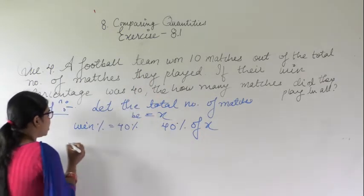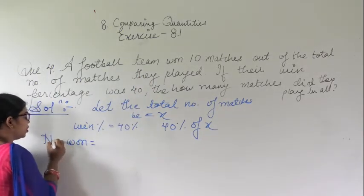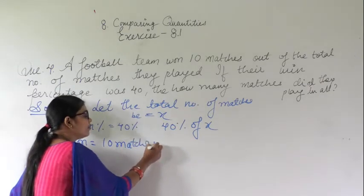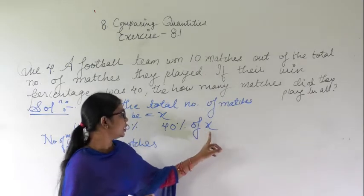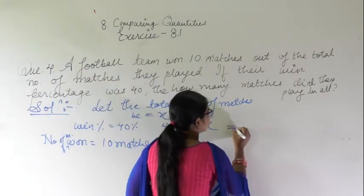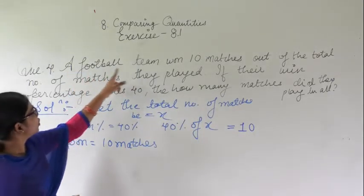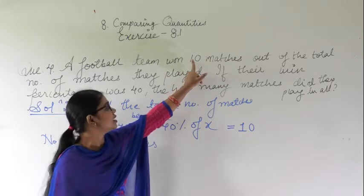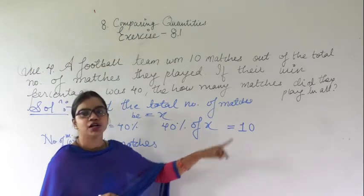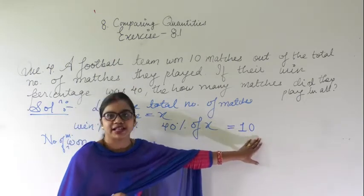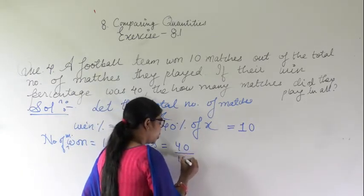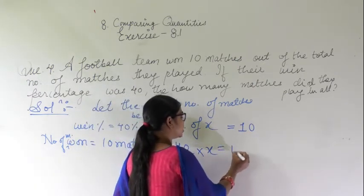And the number of matches they won is 10 matches. So out of the total matches, 40% of the whole matches which they have played is equal to the number of matches which they have won. So 40% means 40 upon 100 into x, equal to 10.